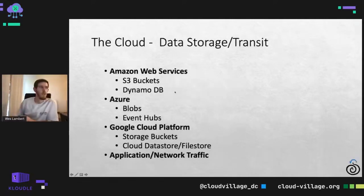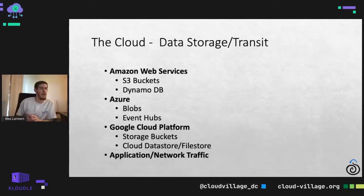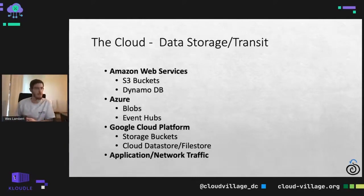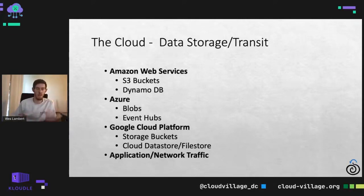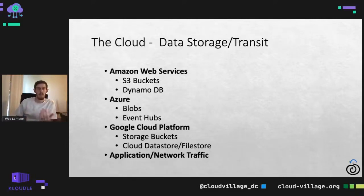When we talk about the cloud and all of the data that it contains, where things are stored, how things happen, how data flows and communication happens between applications — these are just some examples to get the brain flowing. In AWS you might have things like S3 buckets or DynamoDB. You might have Azure Blob Storage or use Event Hubs for forwarding or storing data. In GCP, you might have storage buckets.